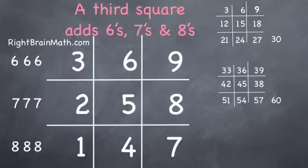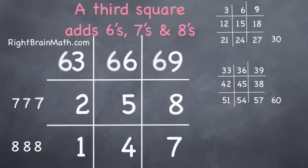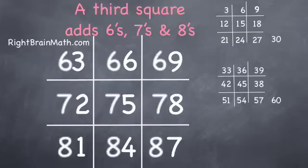This time we'll do the sixes, sevens, and eights in front as the tens digits. Six in front of the three, the six, the nine, sevens in front of the two, the five, the eight, and eights in front of the one, the four, and the seven.